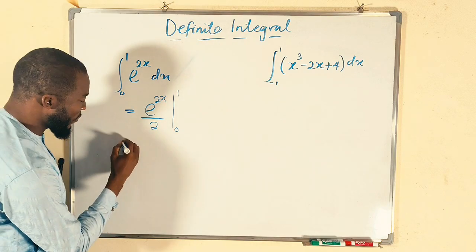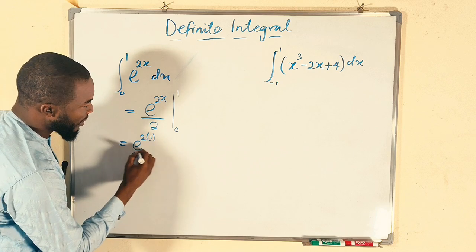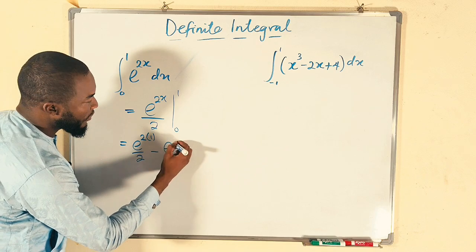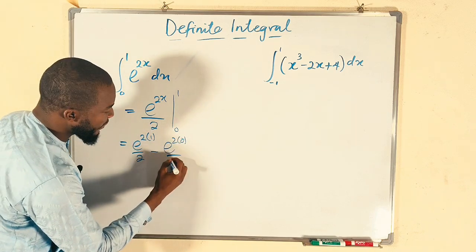Let's substitute the boundaries. We have e to the 2x, 2 times 1, divide by 2, minus e to the 2 times 0. That is the lower boundary. Still divide by 2.